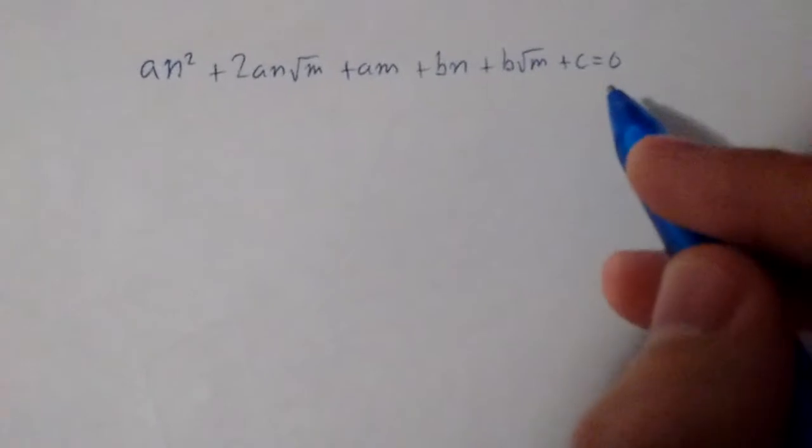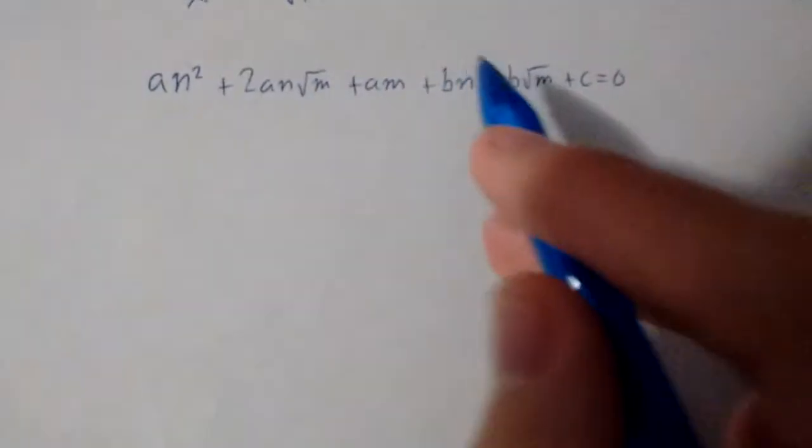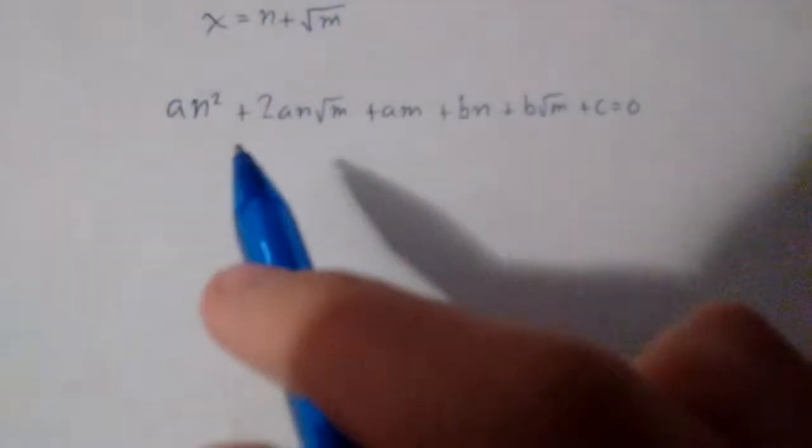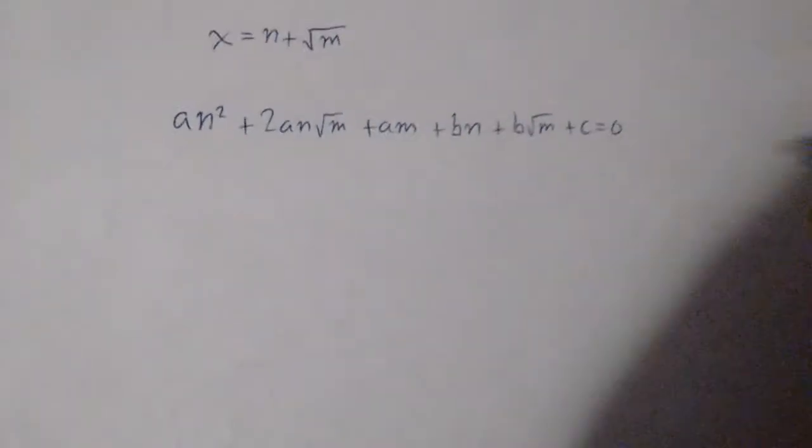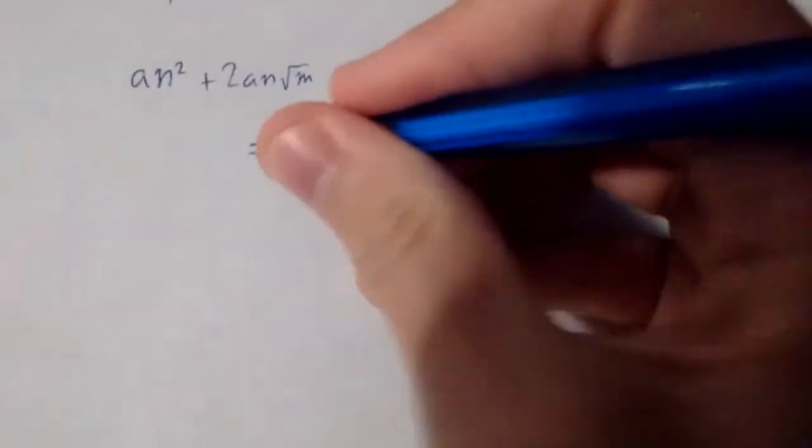Now because everything here is a rational number, we can equate the sum of the rational parts to 0 and equate the sum of the terms with radicals to 0. And after we do that, we get two equations.